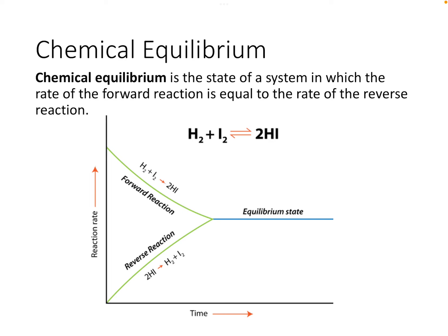In this video we're going to introduce a new concept called chemical equilibrium. Chemical equilibrium is the state of a system where the rate of the forward reaction is equal to the rate of the reverse reaction. For example, down below we have a reaction between hydrogen gas and iodine. Those are both diatomic molecules, and they can react to form two moles of hydroiodic acid.